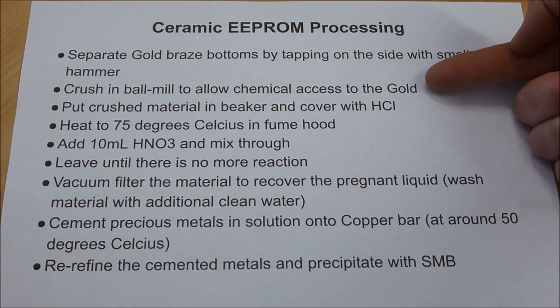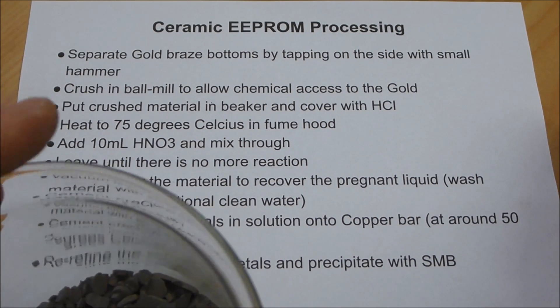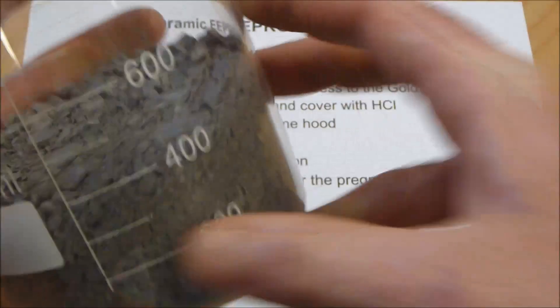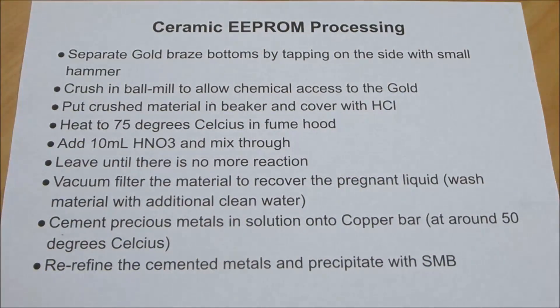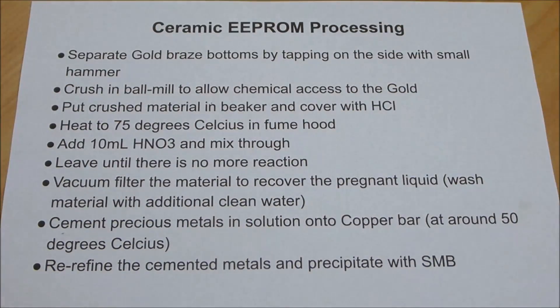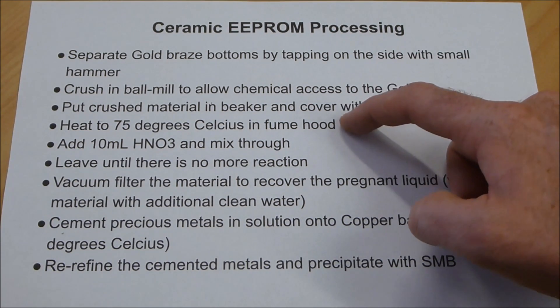You'll see: separate the gold brazed bottoms by tapping on the side with a small hammer, and crush those bottoms in the ball mill to allow chemical access to the gold. Then I'm going to take this material and cover it and add hydrochloric acid until it's covered by maybe 100 milliliters or so. It won't take very much because the material is fairly well packed. Then I'm going to heat all of that to about 75 degrees Celsius on my fume hood.